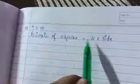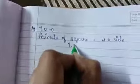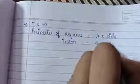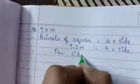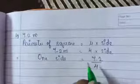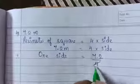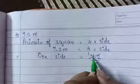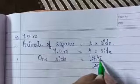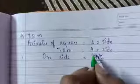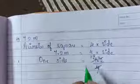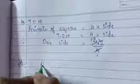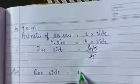Number 4: perimeter is 7.2 metres. Therefore, perimeter of square equals 4 multiplied by side. So 7.2 metres equals 4 multiplied by side. Therefore, one side equals 7.2 divided by 4. Doing the division with decimal: 4 ones are 4, then 7 minus 4 leaves 3, and 32 divided by 4 — 4 eights are 32. So one side equals 1.8 metres.